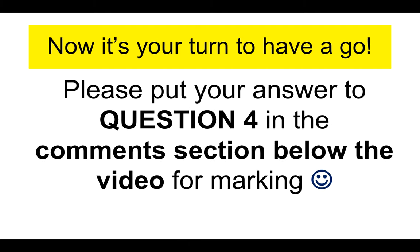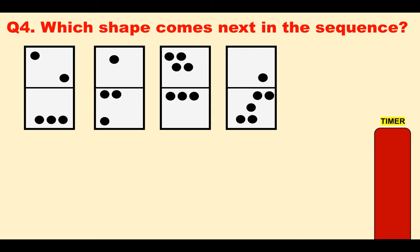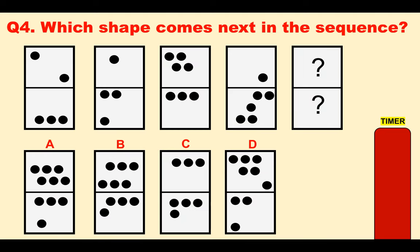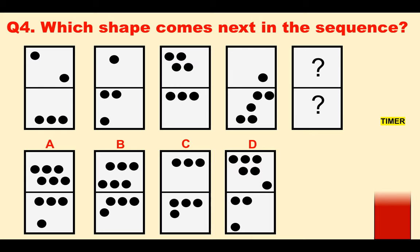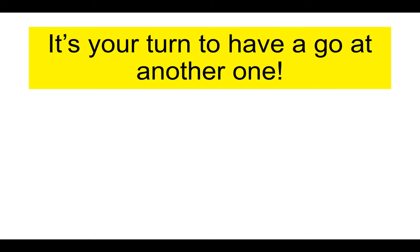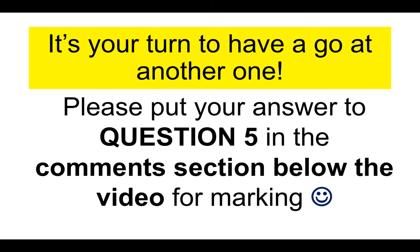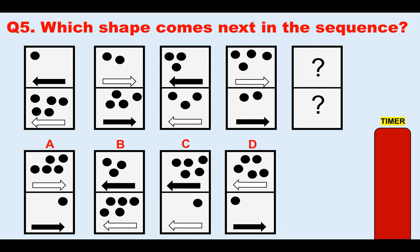Now it's your turn to have a go. Please put your answer to question four in the comments section below the video for marking. Which shape comes next in the sequence? Is it A, B, C or D? After that, question five — which shape comes next in the sequence? This is a tough one. I've increased the timer to 17 seconds, giving you two more seconds. I want to put you under a little bit of pressure because that's how you will improve at abstract reasoning tests. Is it A, B, C or D? And if you need more time, just simply pause the video.